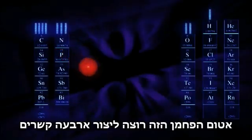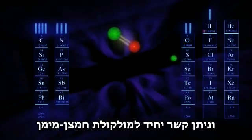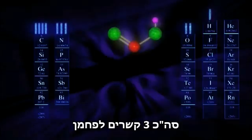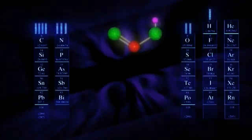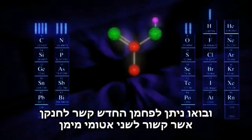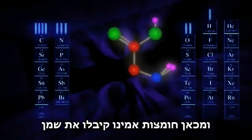This carbon atom wants to make four bonds. So let's give it a double bond with oxygen, and a single bond to an OH molecule. That's a total of three bonds for the carbon — it still wants another. So let's give it another carbon for its fourth bond, and let's give this new carbon atom a bond to a nitrogen atom that is also attached to two hydrogen atoms. This is called an amino group, and is where amino acids get their name.